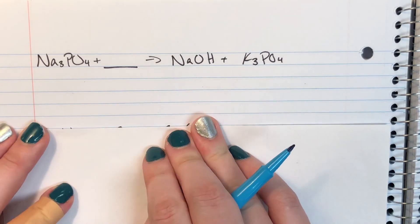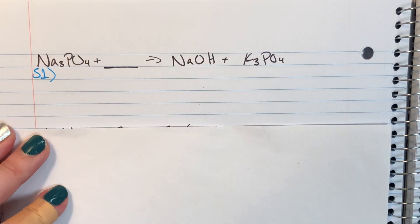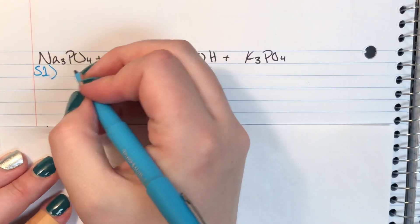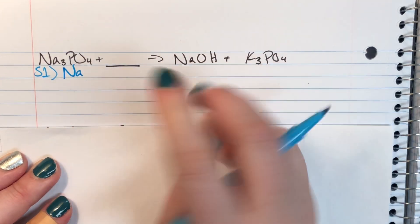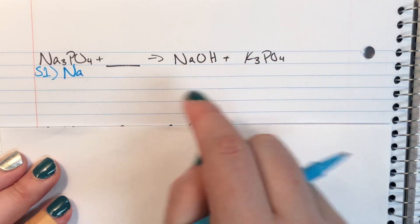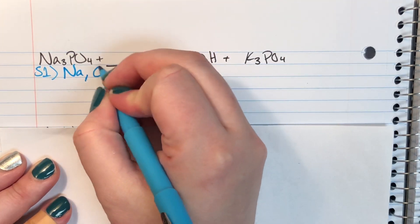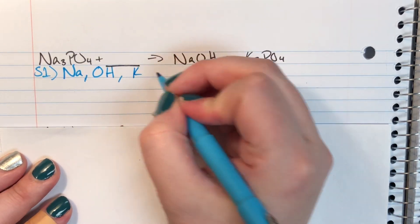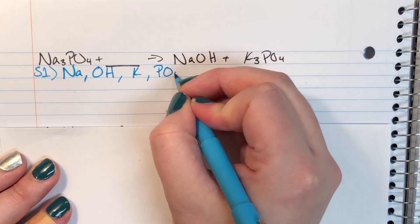Step one is identifying what elements or polyatomic ions are present. Looking at the completed side — the products on the right-hand side — I see the polyatomic ion hydroxide, I see potassium, and I see the polyatomic ion phosphate.